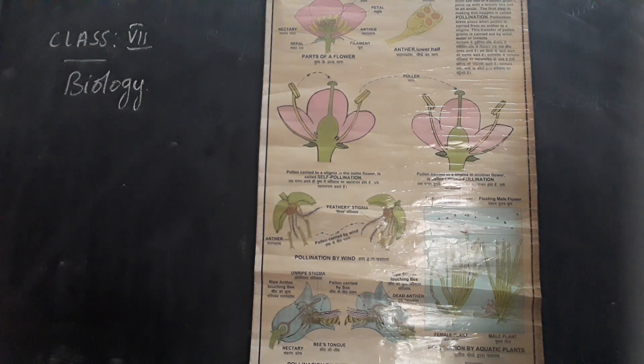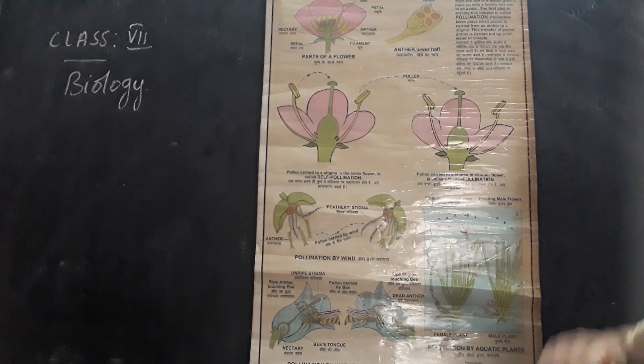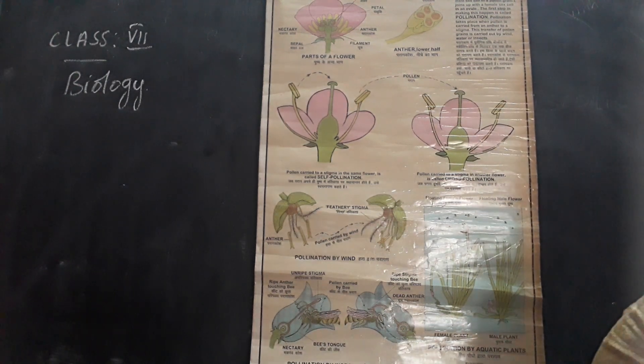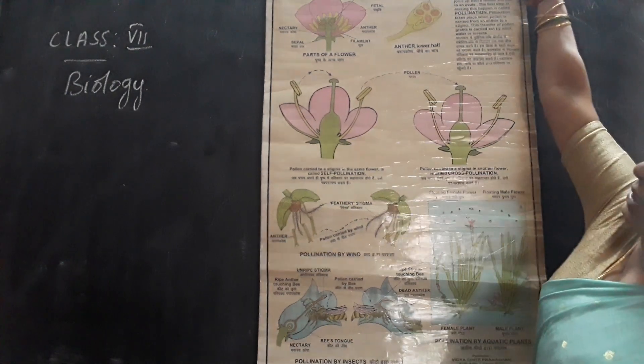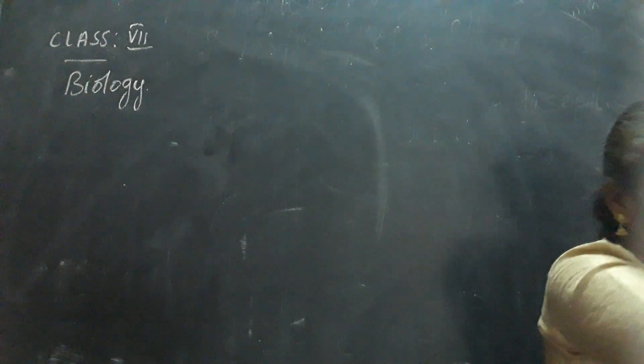Hope you have understood about pollination, children. Now I will tell you about fertilization. What is fertilization? Fertilization means fusion of male and female gametes.